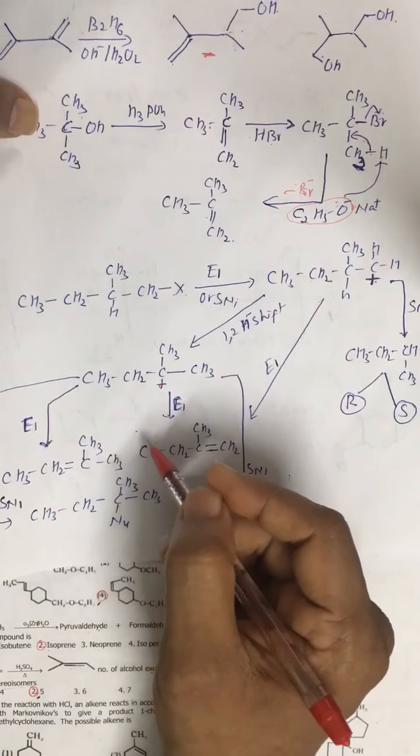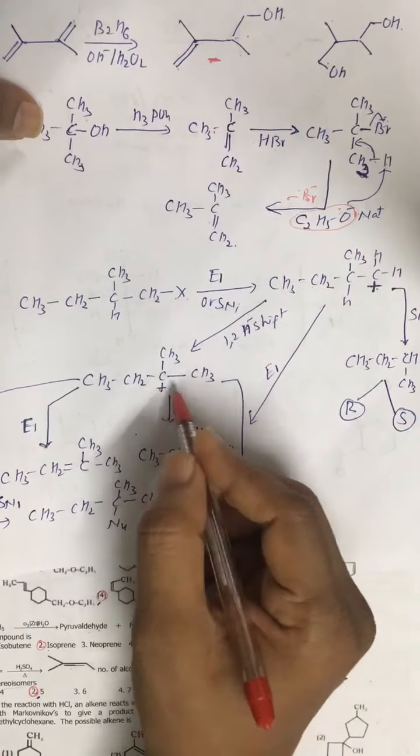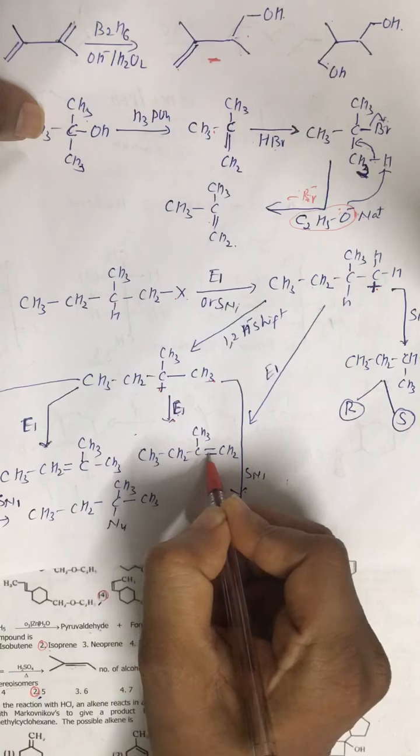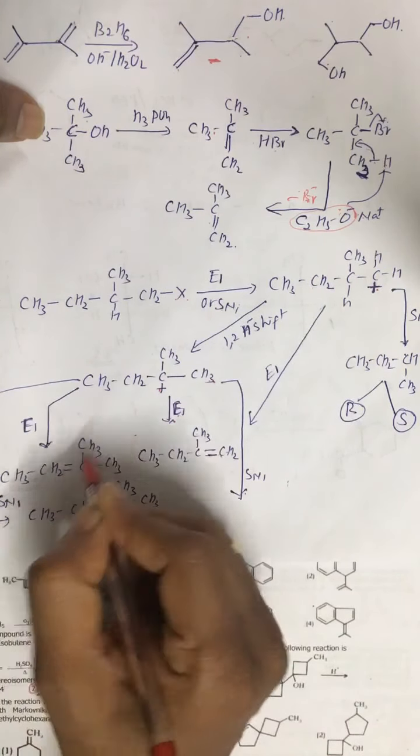If it shows E1 mechanism — that is elimination — there are two possibilities. Hydrogen may be removed from this carbon atom, then we get this kind of alkene, that is 2-methyl-but-1-ene. Or we get 2-methyl-but-2-ene, which will be the major product. This is the Saytzeff product. This is comparatively less branched, and this is comparatively more branched — Saytzeff product and Hofmann's product.